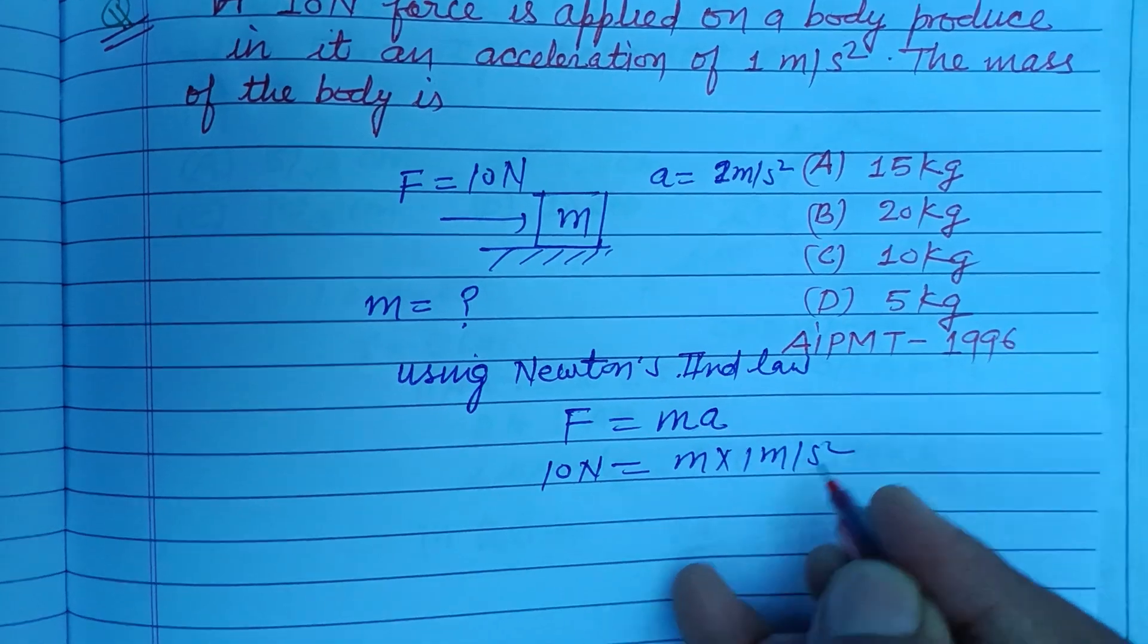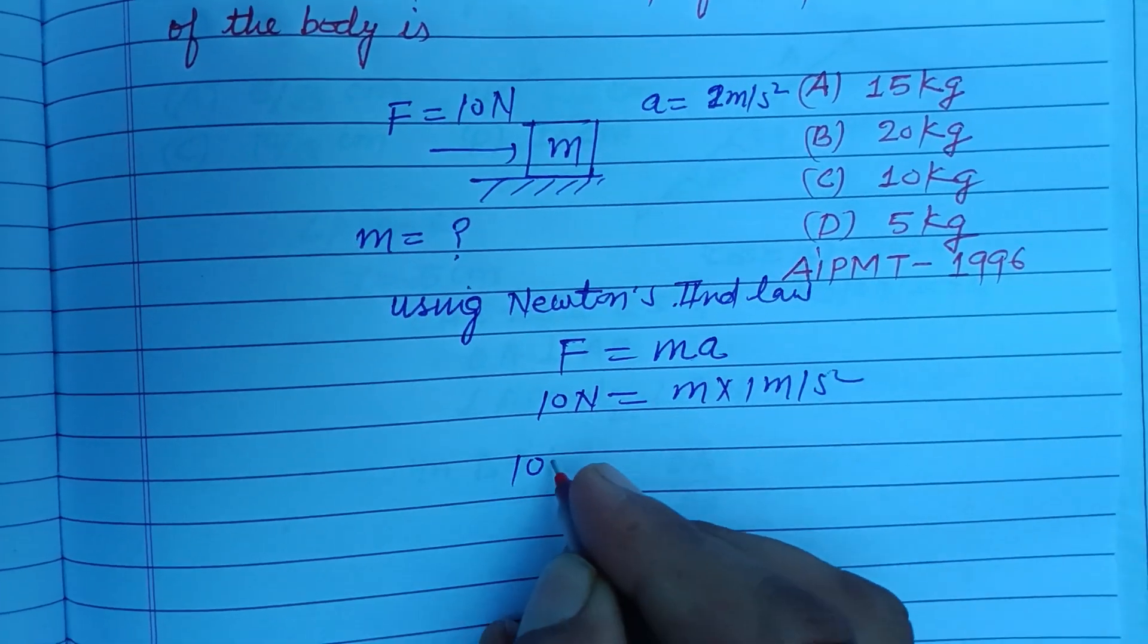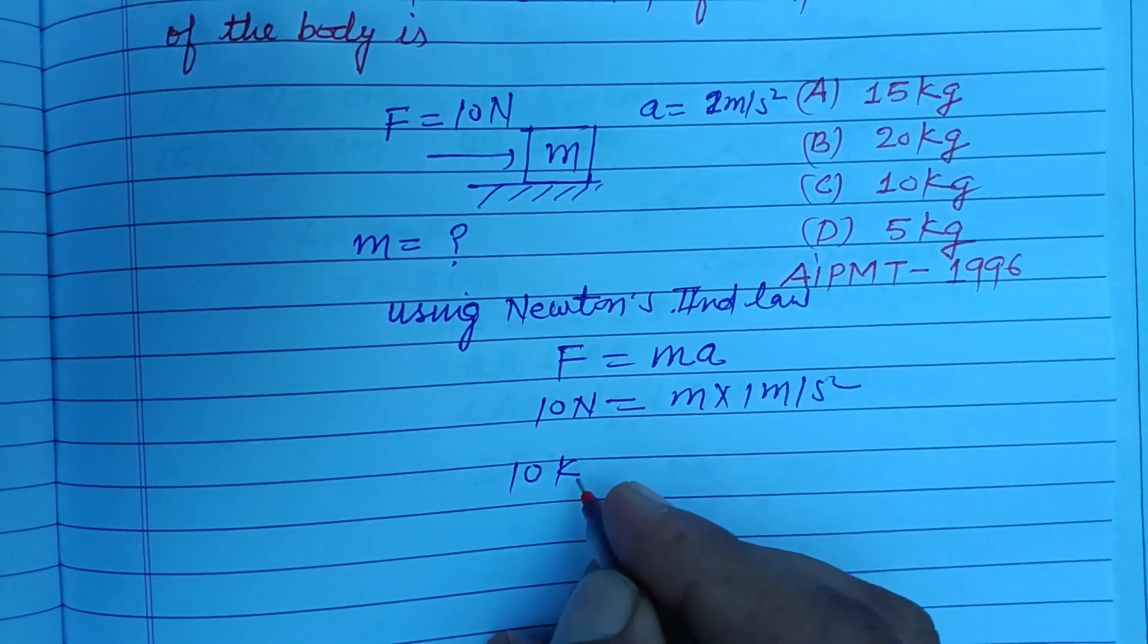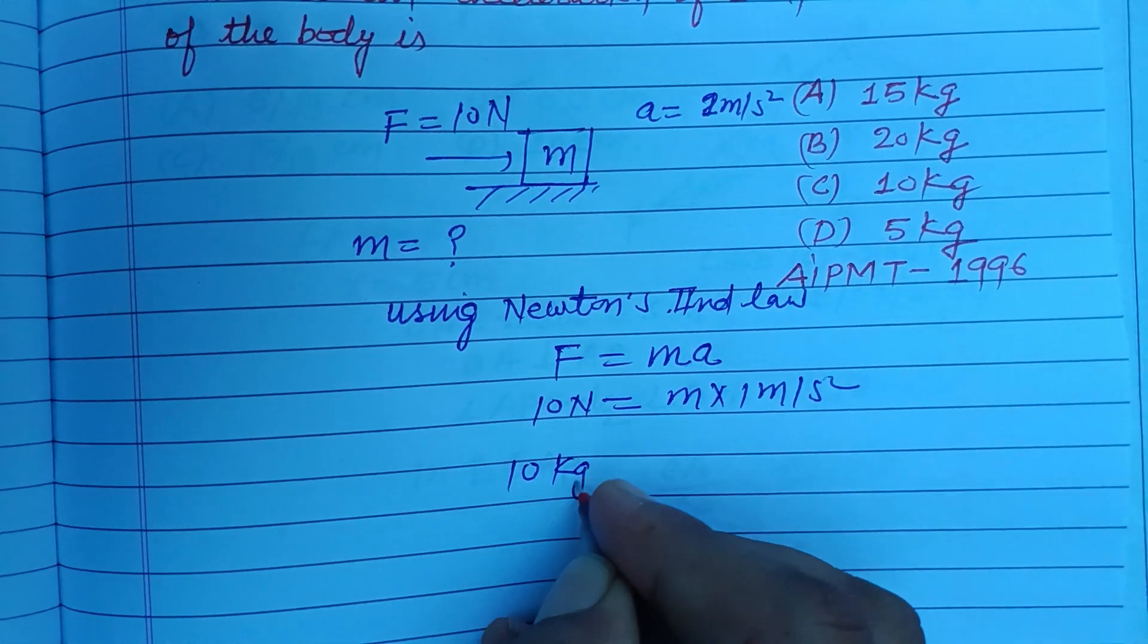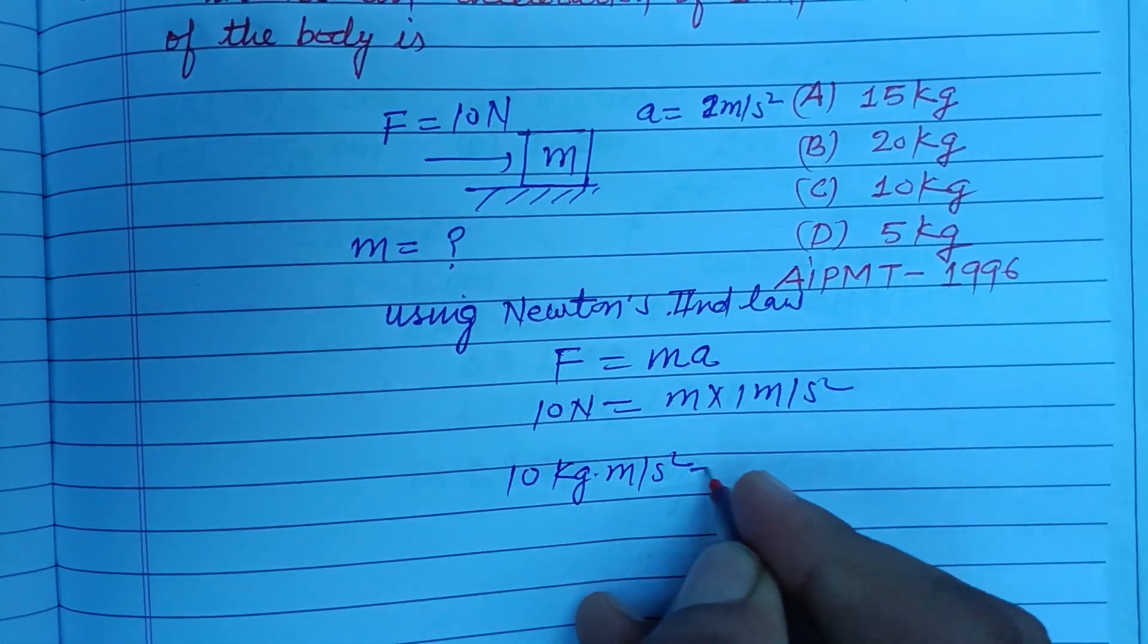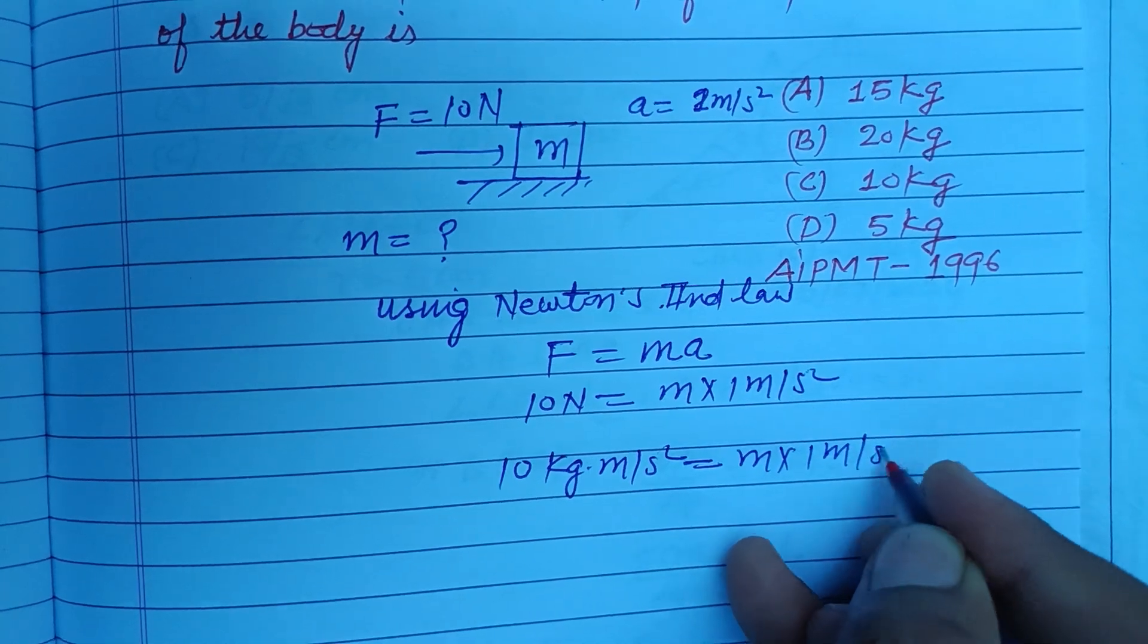So 10 newtons can be written as kilogram meter per second squared, times m, times 1 meter per second squared.